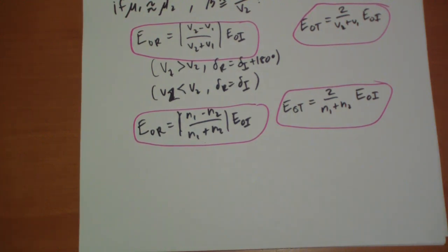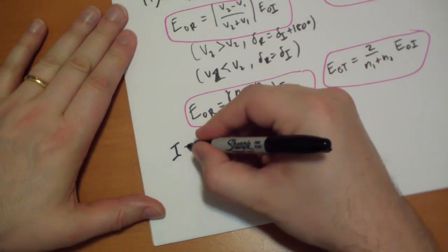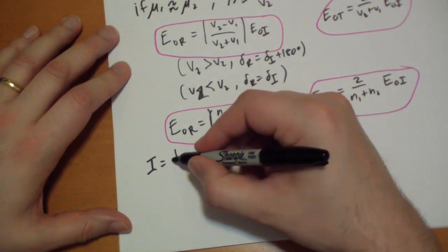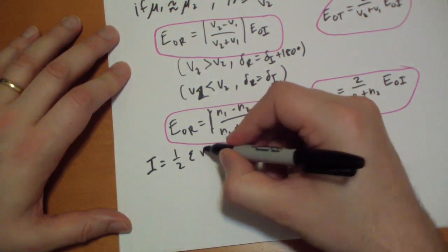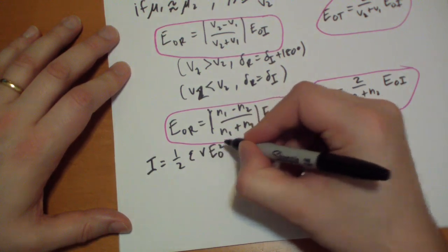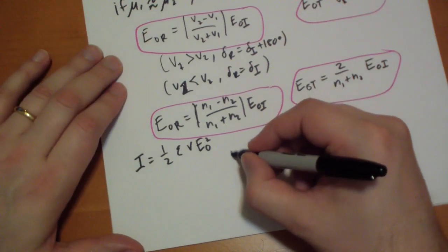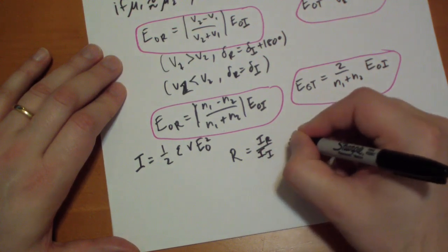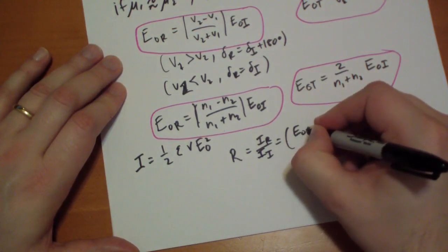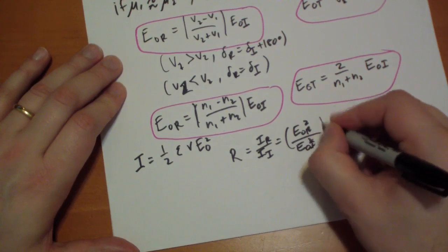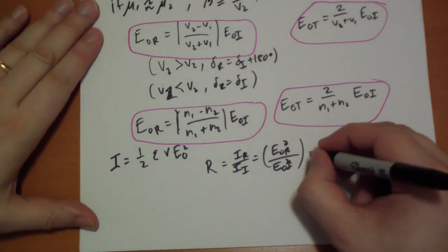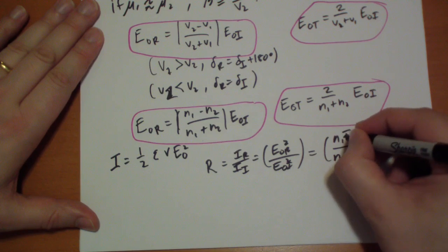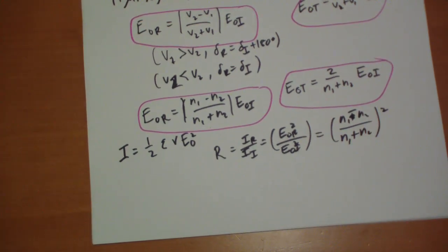Last word is on intensity. So intensity, remember that's the average of the energy transmitted, is just 1 half epsilon times velocity times E naught squared. And so if we take the ratio, the reflection coefficient is the ratio of the intensity of the reflection divided by the intensity of the incident. And that will just basically give us, it's the square of those, which is N1 minus N2 over N1 plus N2 squared. And that's what you get for the reflection coefficient.